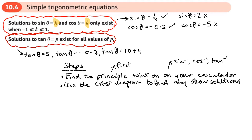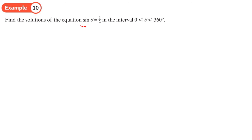You'll be told what range to find your solutions in — for example between 0 and 360 degrees, or negative 180 to positive 180. These trig equations have an infinite number of solutions, and we're just going to be picking a few of them. So this first example asks us to find solutions in the interval 0 to 360 degrees.